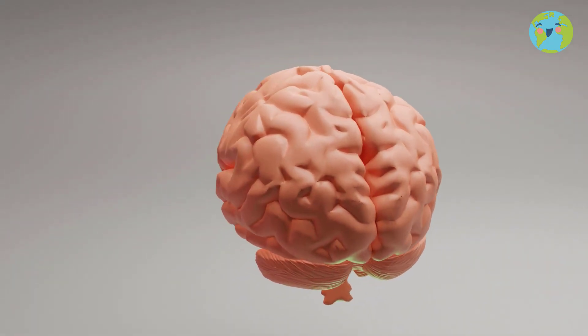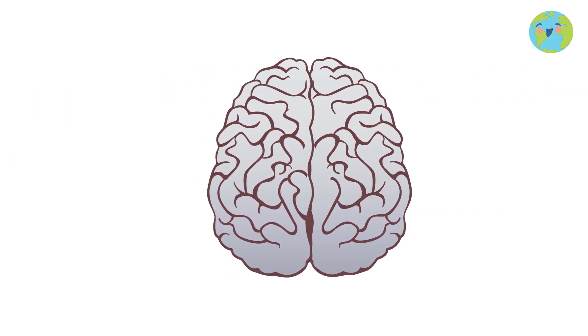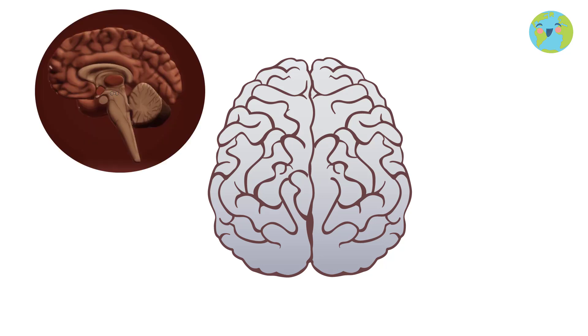The brain, my friends, is divided into two large parts: the right hemisphere and the left hemisphere. Both hemispheres are connected to each other by a structure called the corpus callosum.